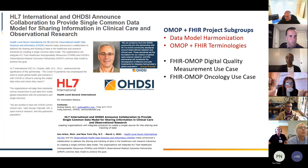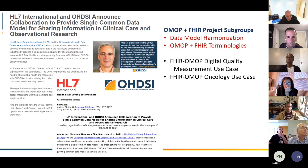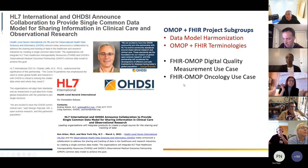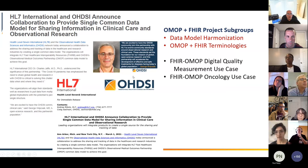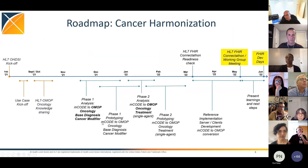Harmonizing the common data models is a big goal. We decided to first map and see how these work together — what the differences are, what works in one but not the other. We created a bunch of subgroups: two with specific use cases — digital quality and oncology — and two for model harmonization and terminology harmonization.